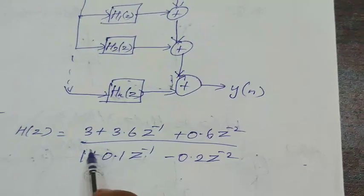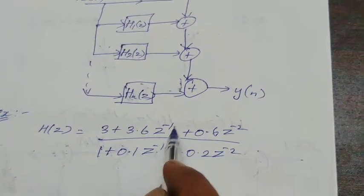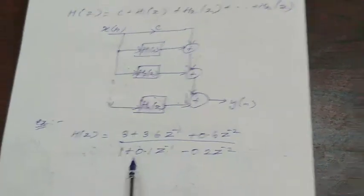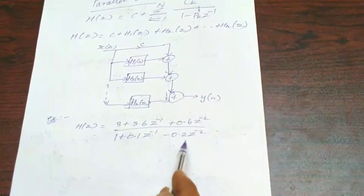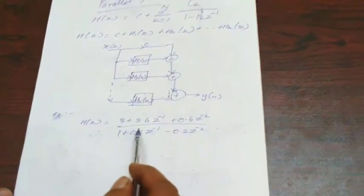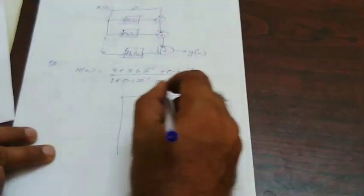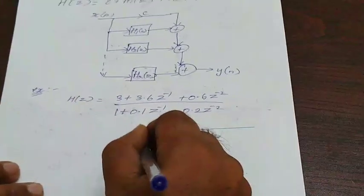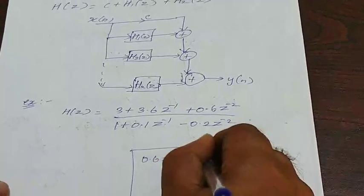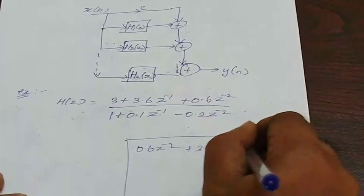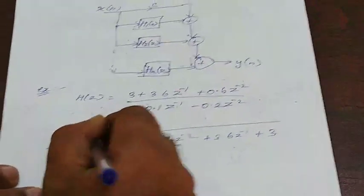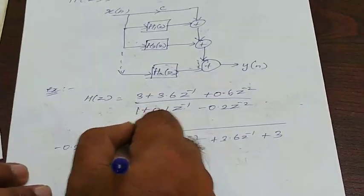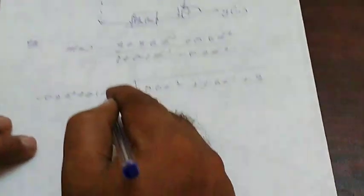Now we can consider one example: 3 plus 3.6 z inverse plus 0.6 z power minus 2, the whole divided by 1 plus 0.1 z power minus 1 minus 0.2 z power minus 2. We have to rearrange this one like in this format. Therefore, we can go for general division principle. In the numerator we have 0.6 z power minus 2 plus 3.6 z inverse plus 3 and denominator we have minus 0.2 z power minus 2 plus 0.1 z inverse plus 1. Now divide this by this one.